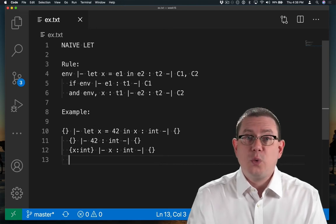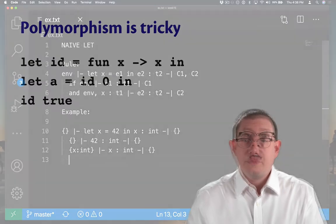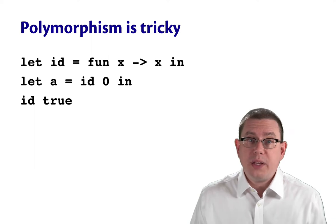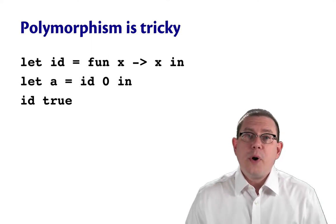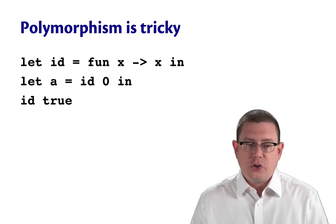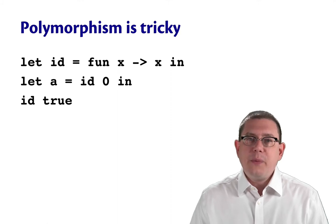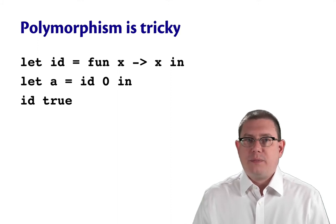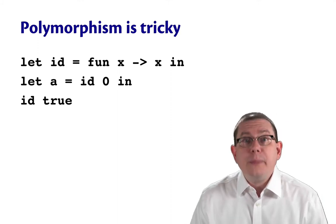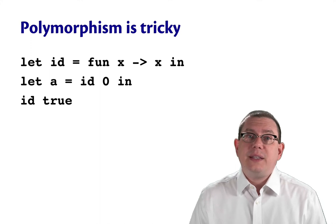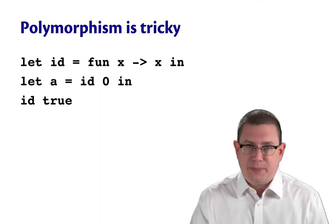It's an easy case where the rule does work correctly. The problem comes with polymorphism. So suppose we were working with the identity function. And then we applied the identity function twice. Once to an int, another time to a bool.